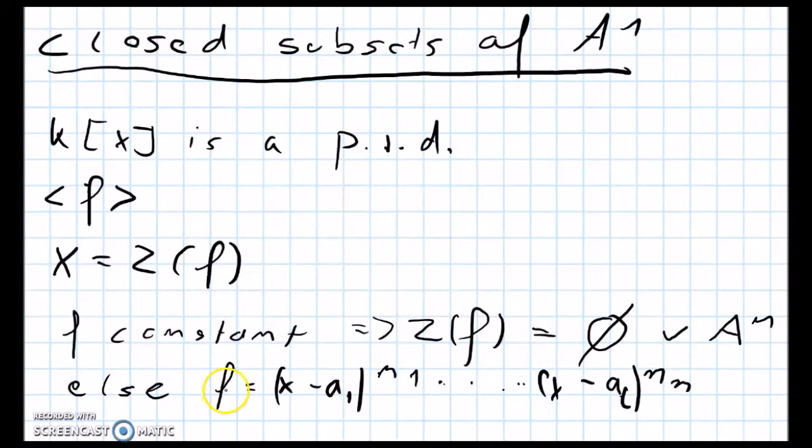Or else f is not constant. Then f splits completely into linear factors because we are working over an algebraically closed field.